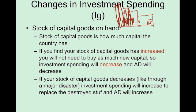One of the things that will change investment spending is the stock of capital goods on hand. If you were to open up a cupboard in your house and find it full of canned goods, how likely are you to go out and buy more? If you just found a cupboard full of canned goods, you're less likely to go buy more. Same thing with businesses — if the stock of capital goods in the country were to increase, businesses will be less likely to go out and purchase new capital goods, and so investment spending will decrease.